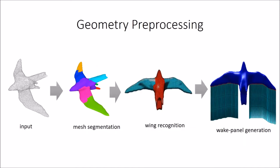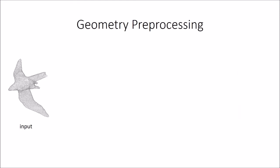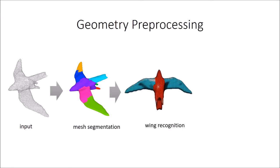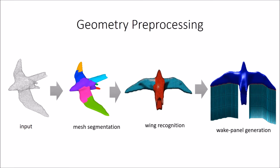In the geometry processing step for any given model, first make shape segmentation on the meshes and recognize the wing parts. Finally, the wake panels are generated behind the wing parts.